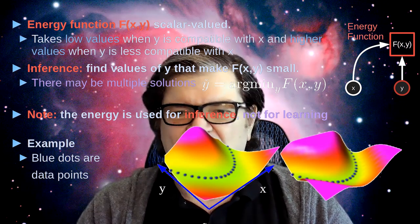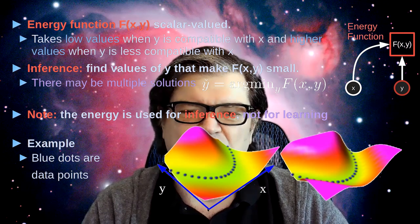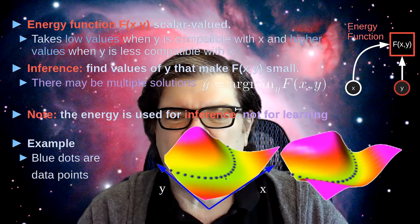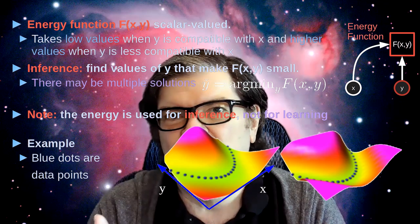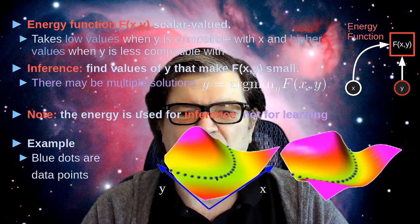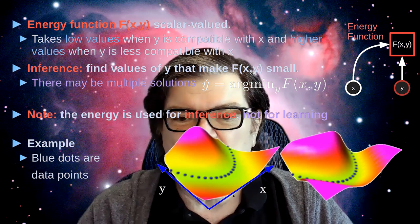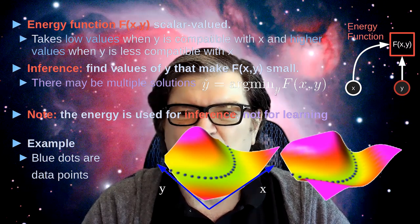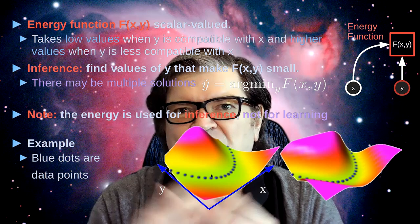Here's an example. Let's say x is a scalar variable and y is also a scalar variable. The model is supposed to give low energy to those blue dots, which represent a particular relationship between x and y — in this case y equals x squared. This is an energy function that captures this relationship because for a given value of x, if I look for the value of y that minimizes the energy, I find the manifold on which those blue dots reside.